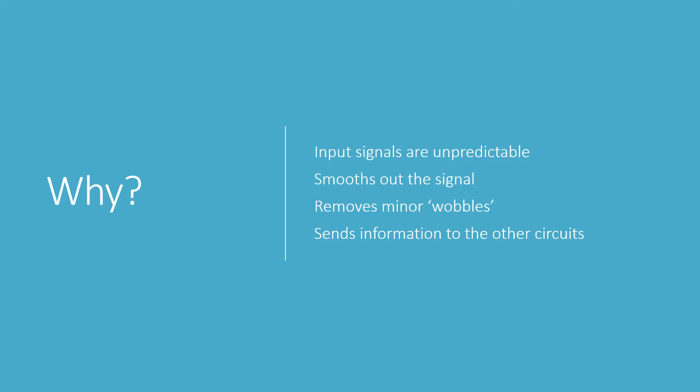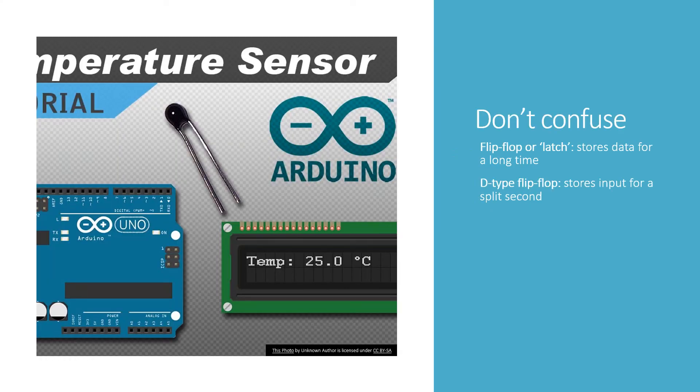This is different from what an ordinary flip-flop does. So, don't confuse these two different types of circuits. An ordinary flip-flop, also called a latch, stores data indefinitely. Could be for hours or even years. As long as the computer is switched on, it holds its stable state unless it receives a signal to change. The D-type flip-flop stores input for a split second. For example, input from a temperature sensor like the one shown here. And the purpose of the D-type flip-flop is to smooth out the input signal and synchronise it with the rest of the computer.